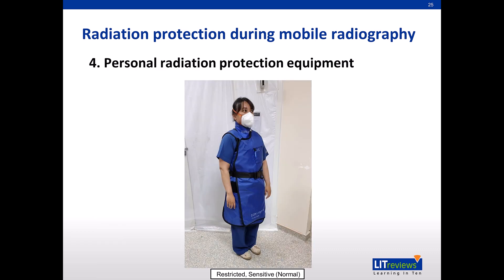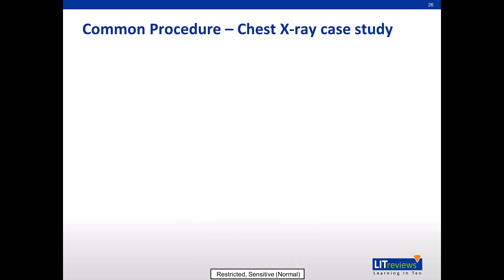Radiographers performing the x-ray will don the lead apron and thyroid shield before radiation exposure. Radiographers will stand at least 2 metres away from the radiation source and a verbal warning will be given before radiation exposure is made. The most common procedure performed is chest x-ray.